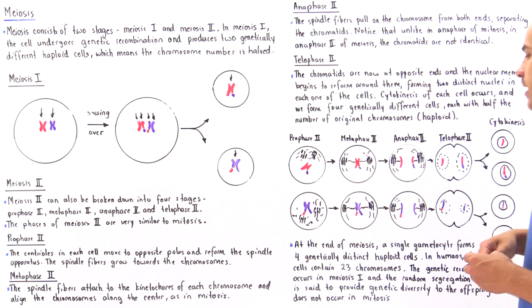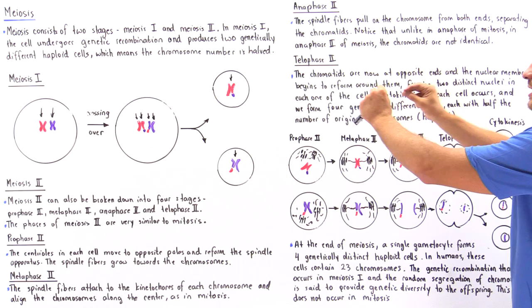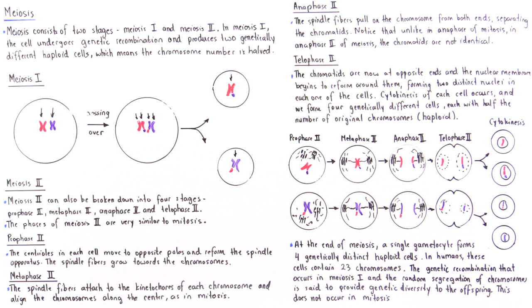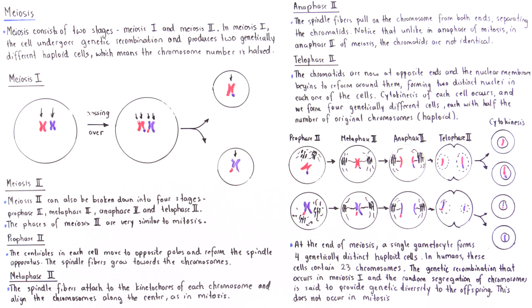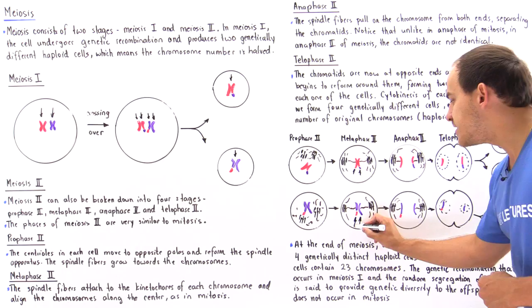In anaphase 2, we have the process of disjunction. The spindle fibers begin to contract and they separate the two chromatids within each chromosome — the spindle fibers pull on the chromosome from both ends, separating the chromatids. Unlike anaphase in mitosis where we have genetically identical chromatids, in anaphase 2 of meiosis these two chromatids are genetically different from each other. This is one important difference between meiosis 2 and mitosis.